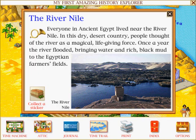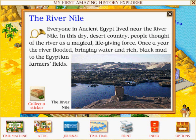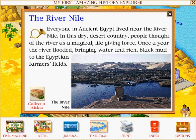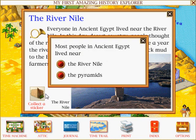The River Nile: Everyone in ancient Egypt lived near the river Nile. In this dry desert country, people thought of the river as a magical, life-giving force. Once a year, the river flooded, bringing water and rich black mud to the Egyptian farmer's fields.